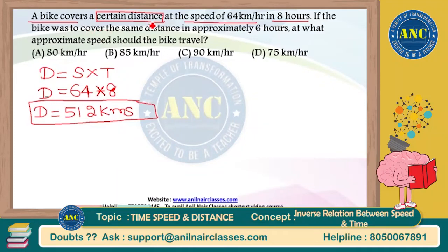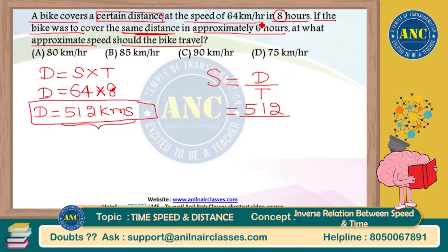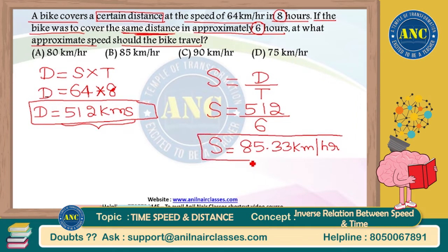The distance to travel is 512 kilometers. If the bike needs to cover the same distance in approximately six hours, what speed should it drive at? Speed equals distance by time: 512 divided by 6 equals 85.33 kilometers per hour. Since 85.33 is not in the answer options, the approximate answer is 85 kilometers per hour.